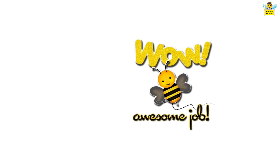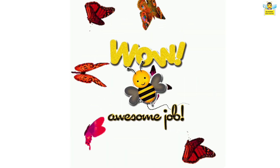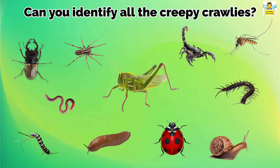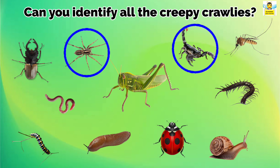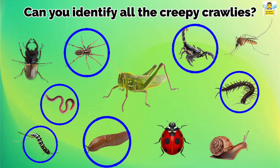Wow! Awesome job! Now, let's move on to the next activity. Can you identify all the creepy crawlies? Spider, scorpion, earthworm, centipede, caterpillar, slug and snail.